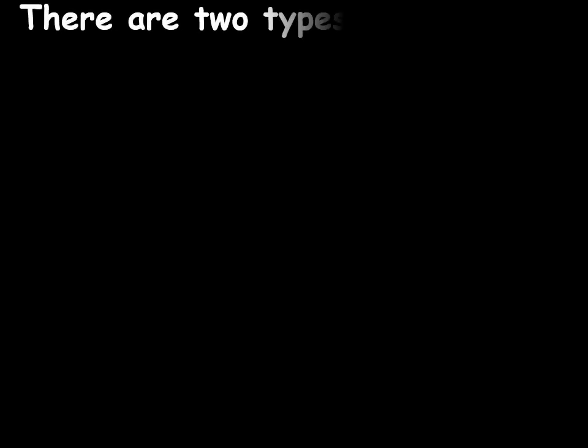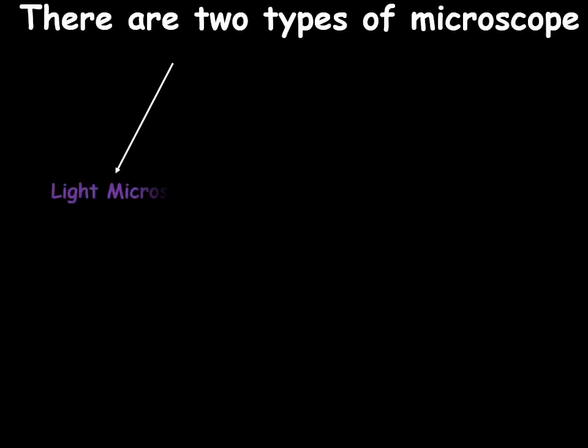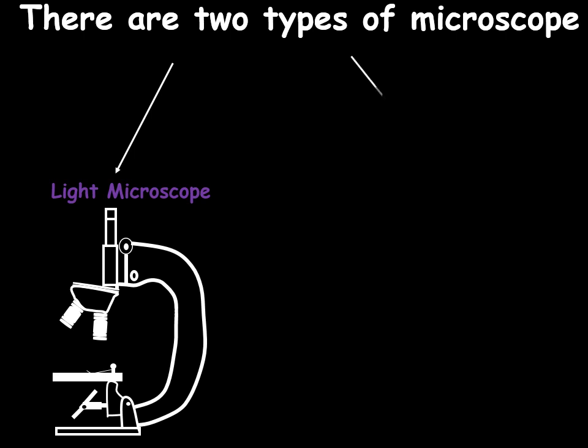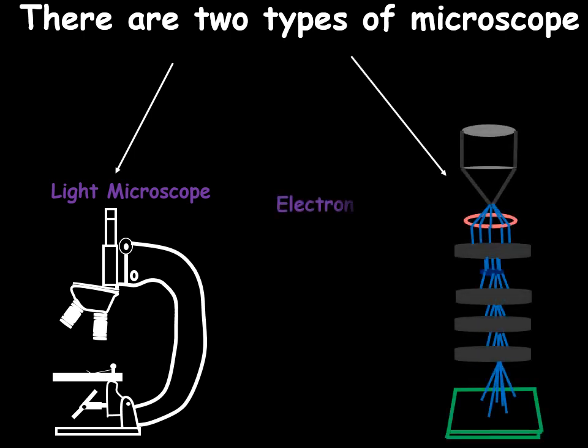Today we will show you about the two types of microscope. First, the light microscope which you use in your lab and then second, the more advanced microscope known as the electron microscope.